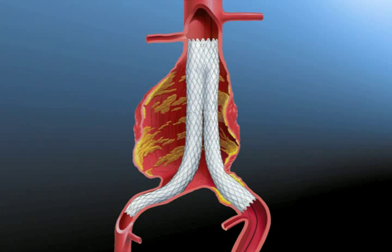Completion angiography should be repeated. When deploying the aortic extender cuff, use the rotational method of deployment. This will provide optimal control in the deployment of the extender cuff. Failure to do so could result in inaccurate deployment. The AneuRx stent graft implantation is complete with exclusion of blood flow to the aneurysm.